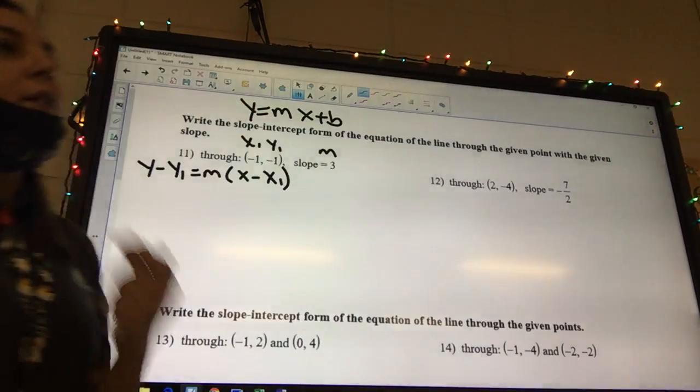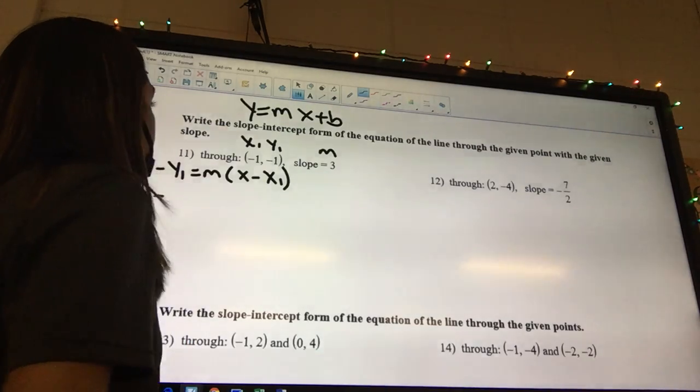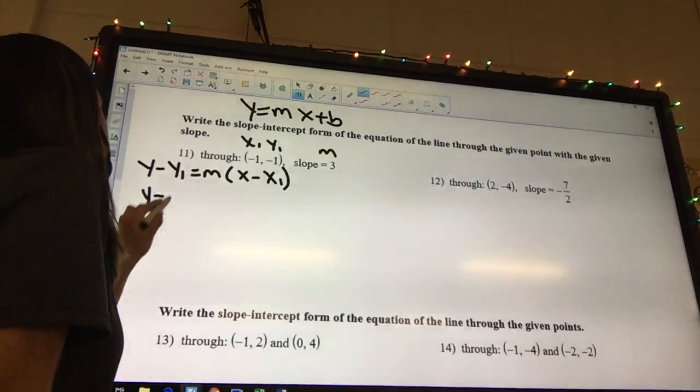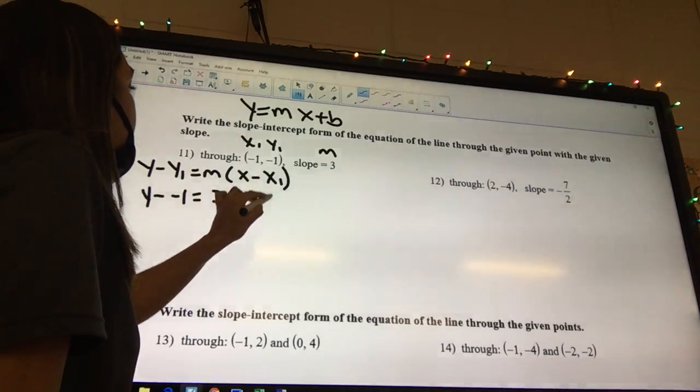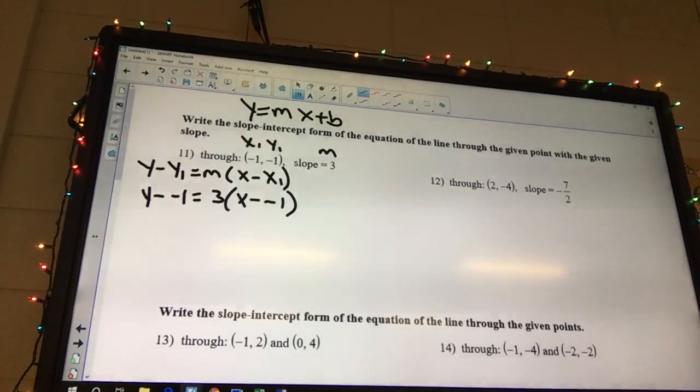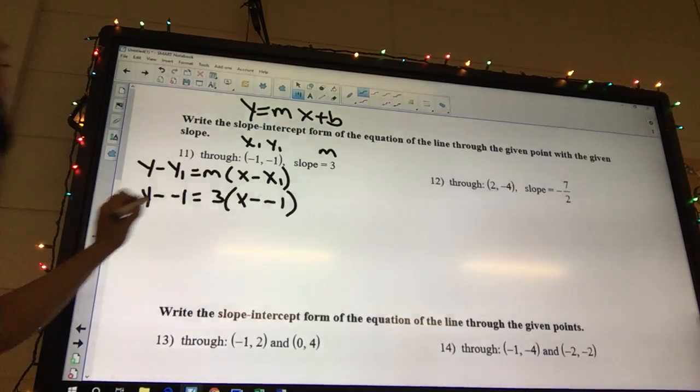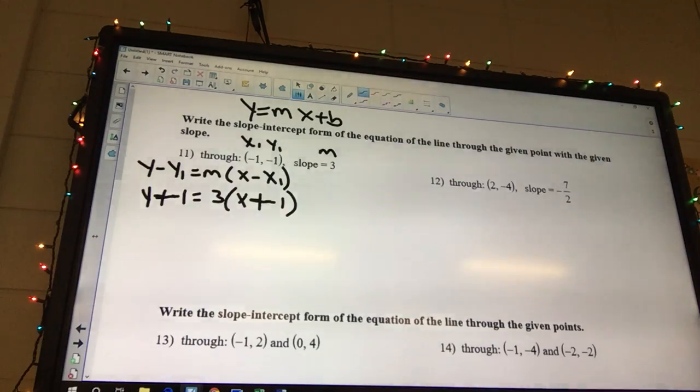I haven't worn a mask in forever. I feel like I keep getting out of breath today from talking up here. So I got y minus. My y1 is negative 1. My m is 3. x minus x1 is negative 1. What's a minus minus? Do we stop or do we keep going? Okay. We got to do that. Stop. Keep going.